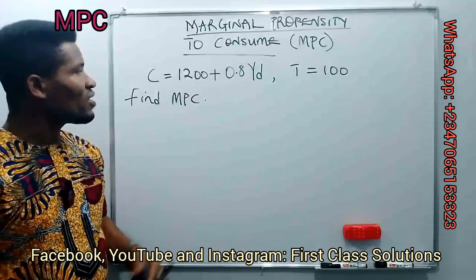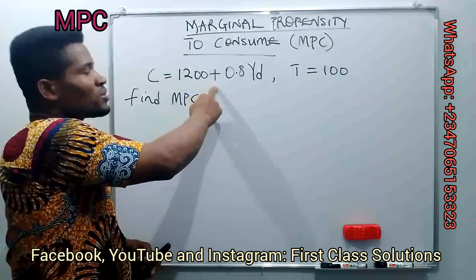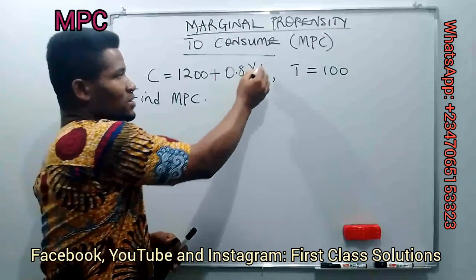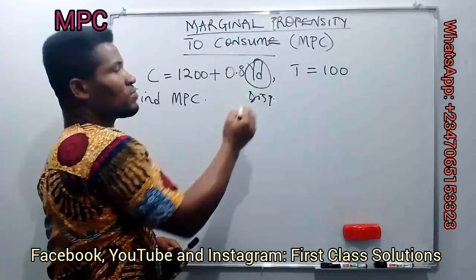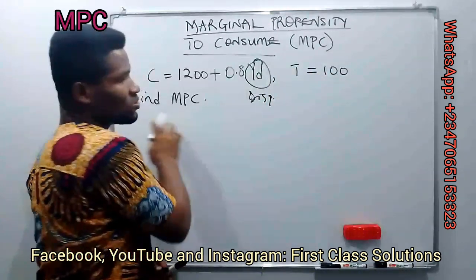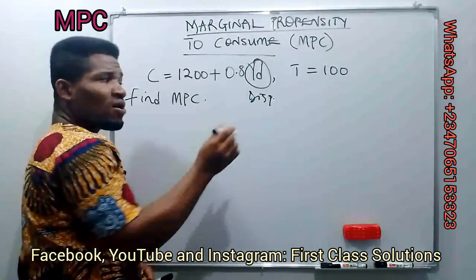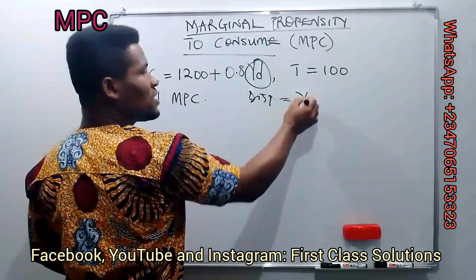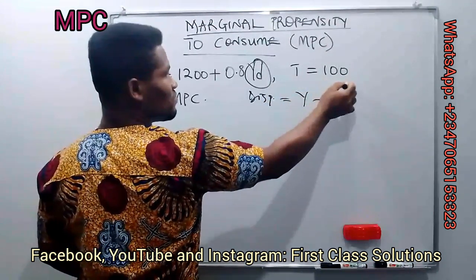So looking at this question, we have our consumption function to be C = 1200 + 0.8Yd. Our Yd here is our disposable income. They give us our tax to be 100, and we are also to find our marginal propensity to consume. Remember also that our disposable income is actually calculated as income minus income tax.